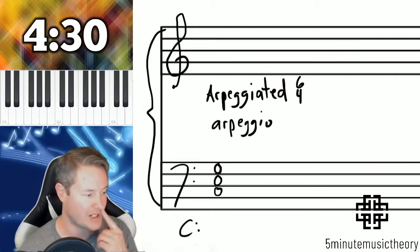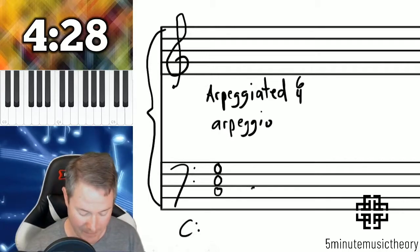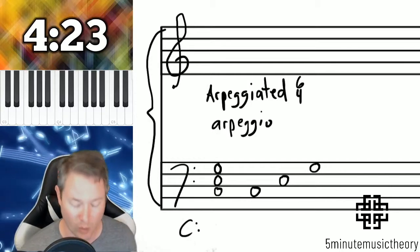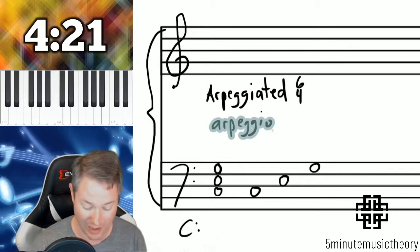A chord happens all at the same time. I've written a C major chord there, and now I'm going to write a C major arpeggio. It contains the same notes; it's just that they're played one at a time. That's what an arpeggio is.